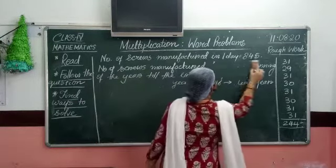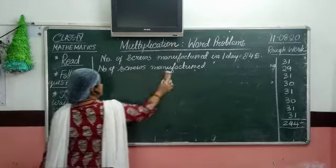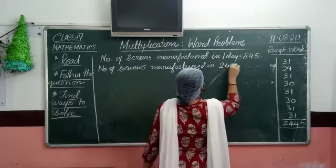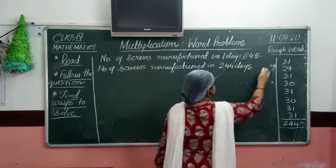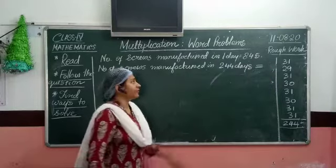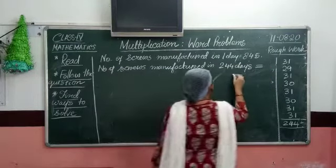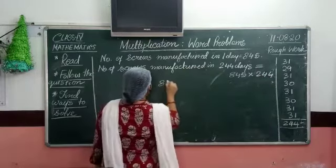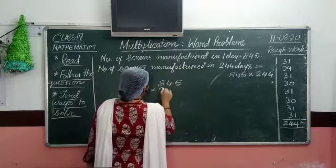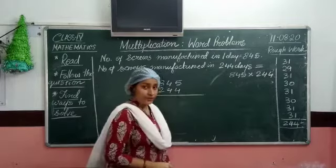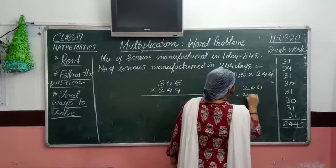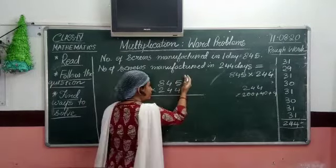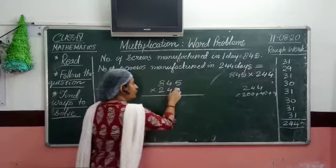So I am going to rewrite the question as: number of screws manufactured in 244 days. What do we do here? We have to multiply 845 by 244. So 845 into 244. As we all know, 244 means 200 plus 4 tens plus 4 ones. We are going to start our multiplication from the right-hand side, so 845 has to be multiplied by 4 ones first.